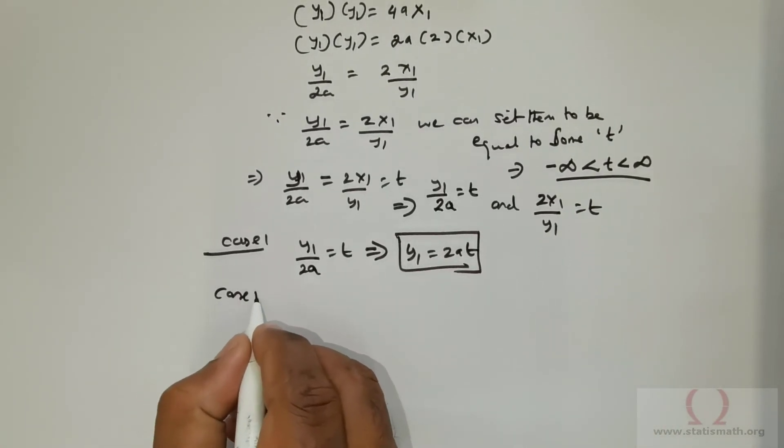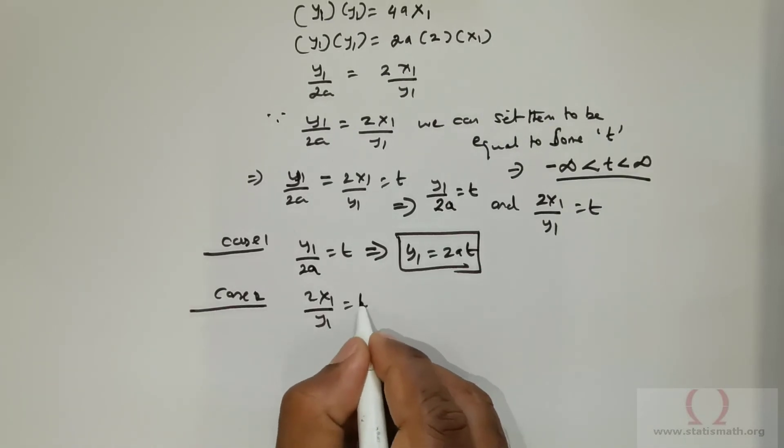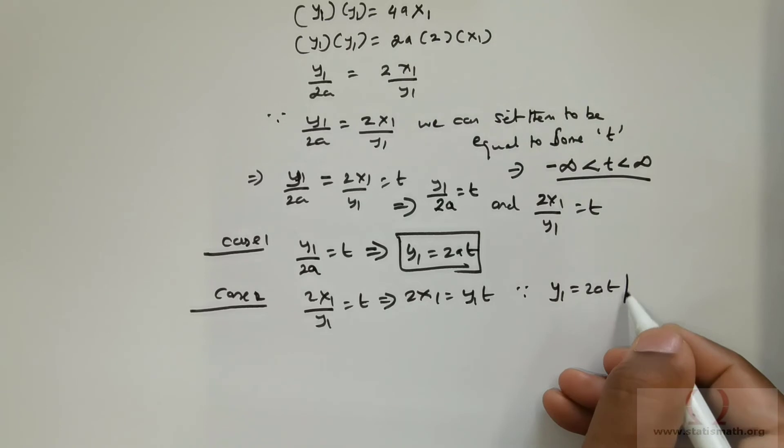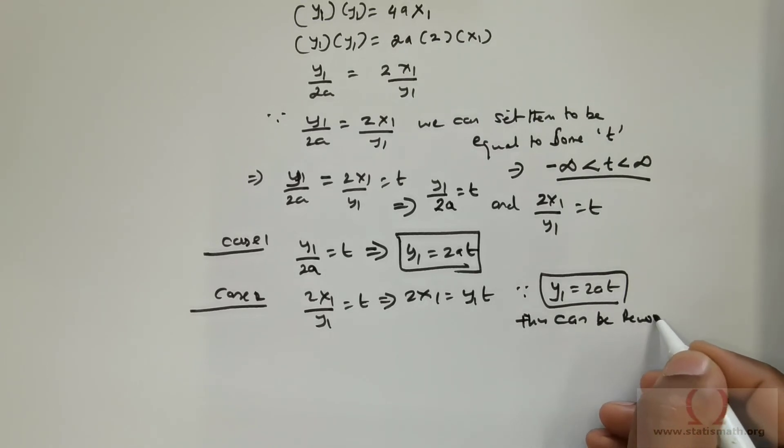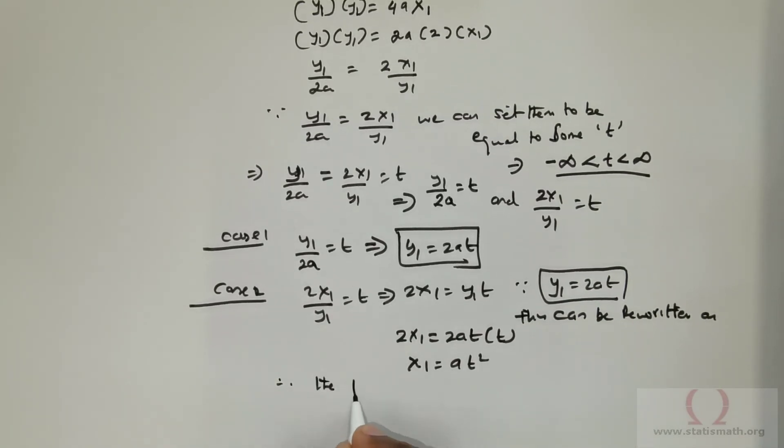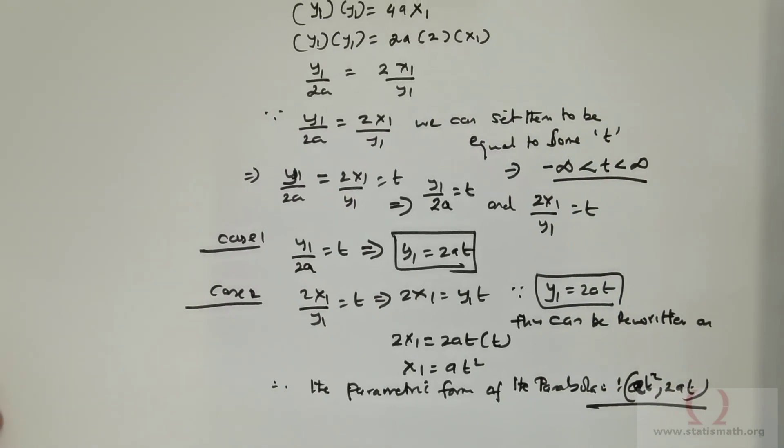Case 2: 2x₁/y₁ = t, which means 2x₁ = y₁t. Since y₁ = 2at, we can rewrite this as 2x₁ = 2at × t, which means x₁ = at². Therefore, the parametric form of the parabola is (at², 2at). This completes the parametric form for the parabola.